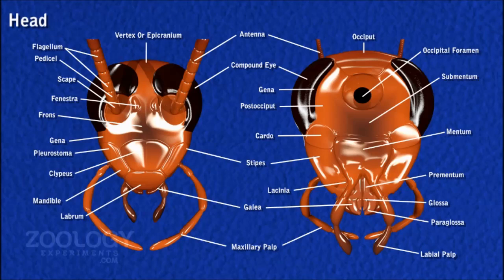The epicranial plates are joined in front by an inverted Y-shaped epicranial suture. The unpaired triangular frons lies between the arms of the epicranial suture. A broad rectangular clypeus forms the lower part of the face. The two lateral sides of the head below the compound eyes are formed by the genae. The head bears a number of jointed appendages.